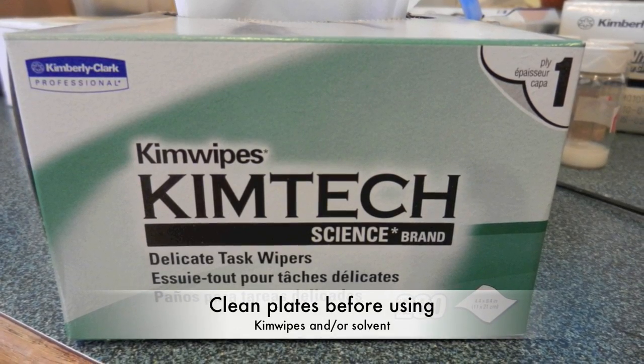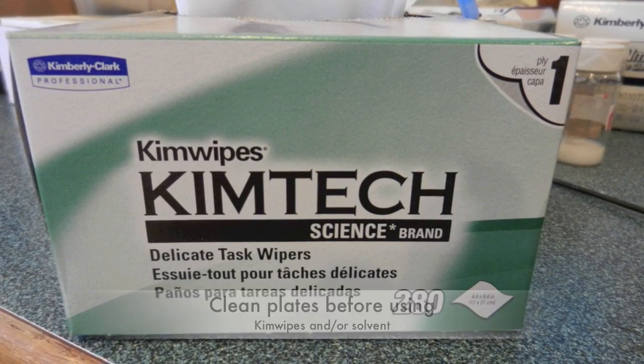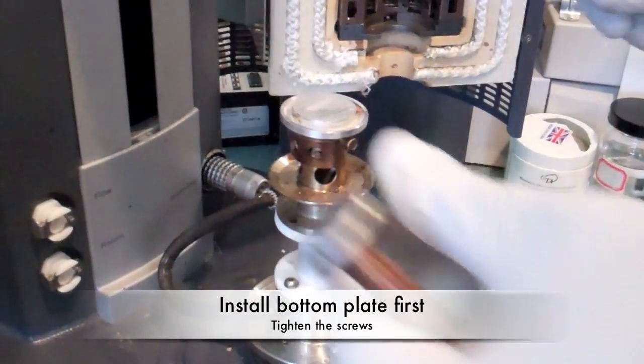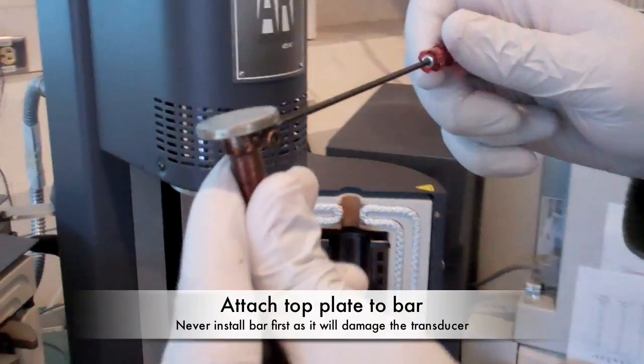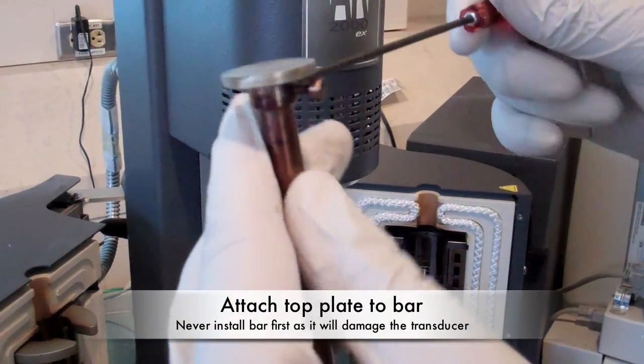Before installing the rheometer plates, make sure they are cleaned with solvent and kim wipes. First attach the bottom plate by placing the lower plate in the center hole and holding as you tighten the screws. To attach the top plate, fix the plate onto the bar first and tighten the screws.